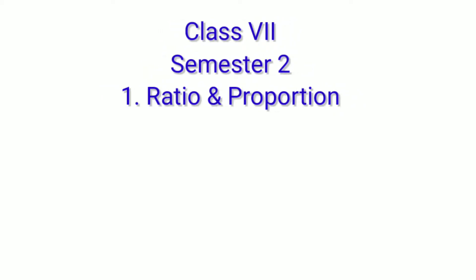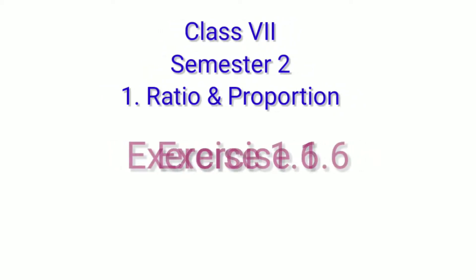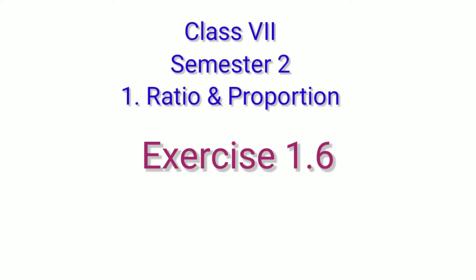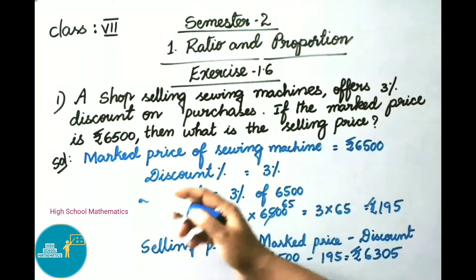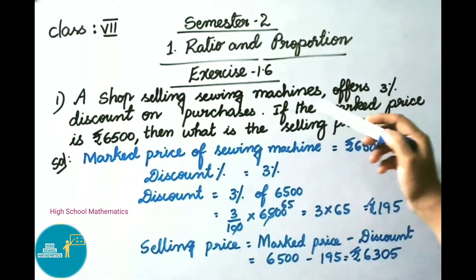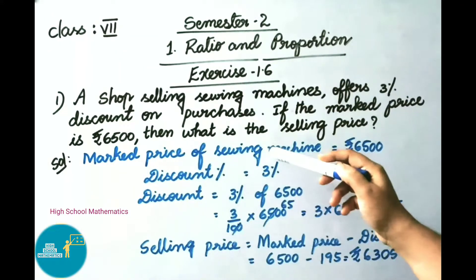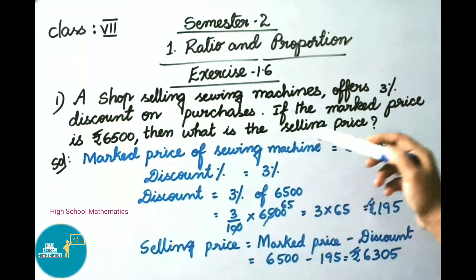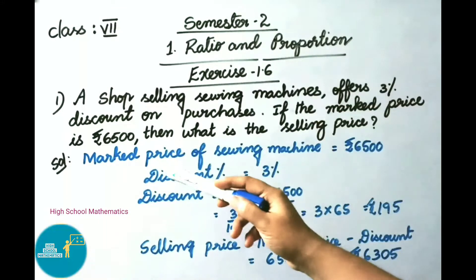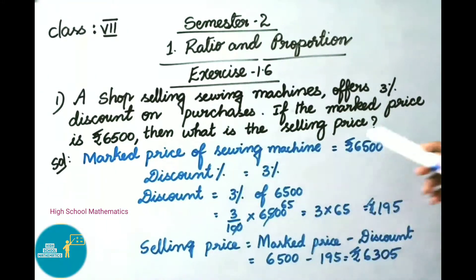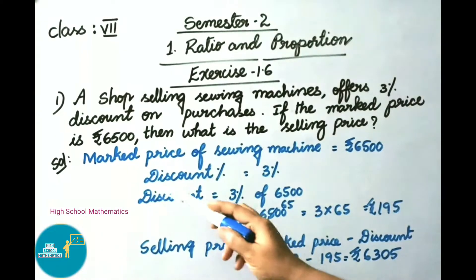Hello everyone, welcome to High School Mathematics channel. Today we are going to learn Class 7 Semester 2 Chapter 1, Ratio and Proportion, Exercise 1.6. Question number one: a shop selling sewing machines offers 3% discount on purchases. If the market price is 6500 rupees, then what is the selling price? Let us see the solution.